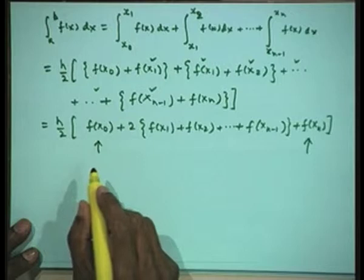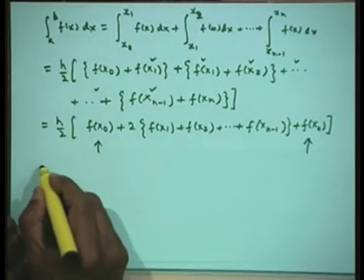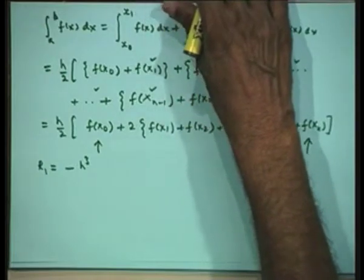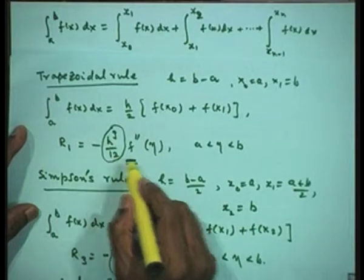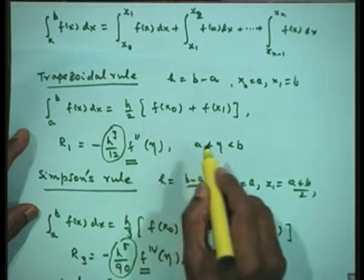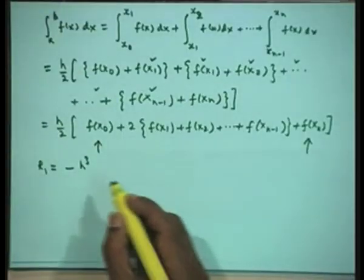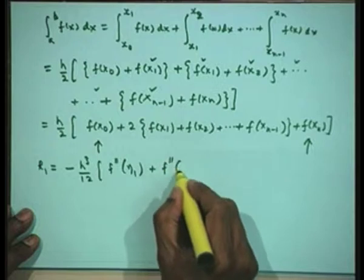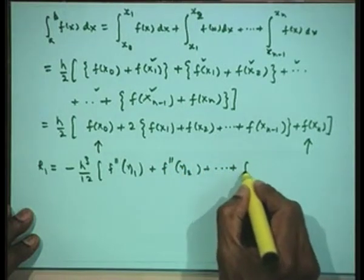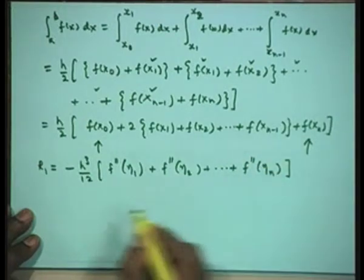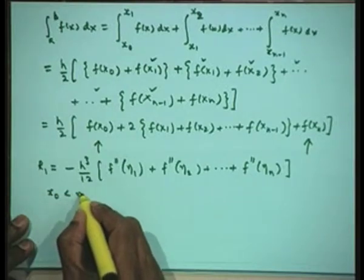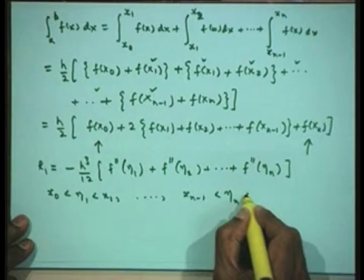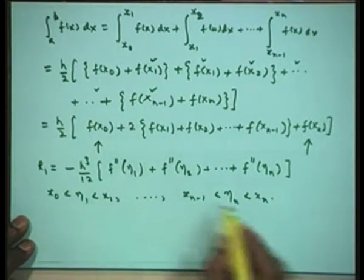Now let us write down the error for the composite trapezoidal rule. Each subinterval contributes an error of -h³/12 · f''(ηi), so the total error involves f''(η1) + f''(η2) + ... + f''(ηn), where each ηi lies within its respective subinterval.